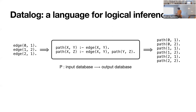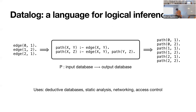One way to think about this is that a datalog program is like a function that takes an input database and produces an output database. The input database is like the world; the output database is these derived things we've written rules defining. Datalog was originally used for deductive databases — SQL doesn't have any way to do recursion, so they wanted to add recursion to it. More recently it's been really popular for static analysis, since it scales really well so you can write static analyses that crunch really large code bases. It's also used for networking, defining access control policies, and that sort of thing.